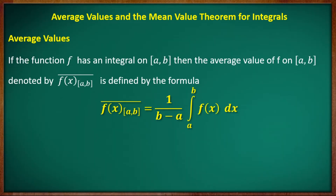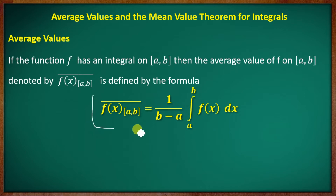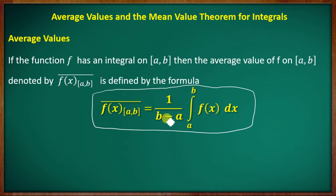This is the average value definition. If the function f has an integral on closed interval [a, b], then the average value of f on closed interval [a, b], denoted f-bar on [a, b], is defined by the formula: f-bar on [a, b] equals 1 over (b minus a) times the integral from a to b of f(x) dx.